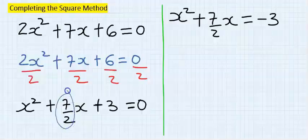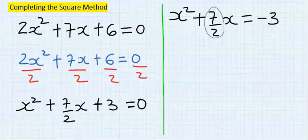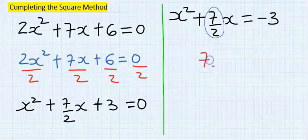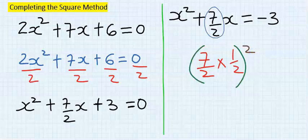Step number three: complete the square by multiplying the coefficient of x by one half, then squaring. That is seven over two multiplied by one half, then you square both. This is completing the square.